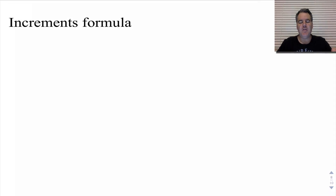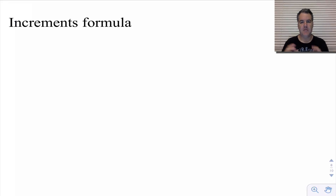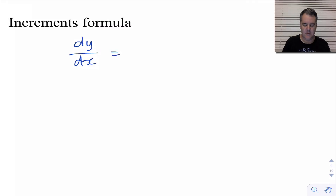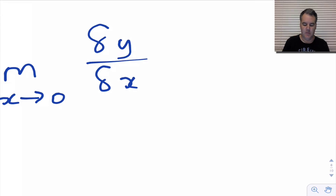Hi there. In this video we're going to talk a little bit about the increments formula and what that's all about. We have talked about the derivative and said that the derivative is the limit as delta x tends to 0 of delta y over delta x — a small change in y over a small change in x, which we use delta for.